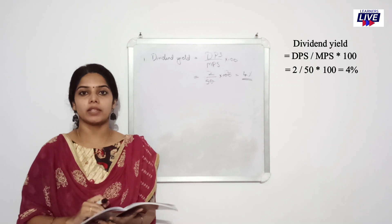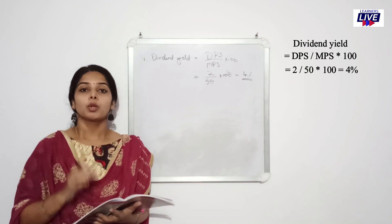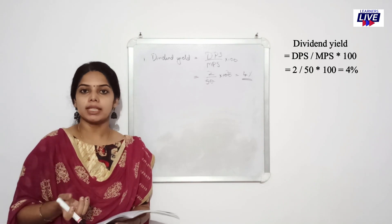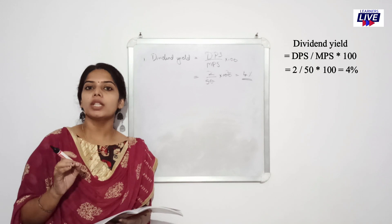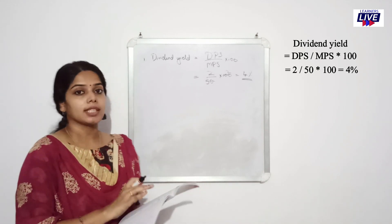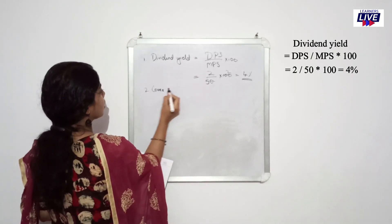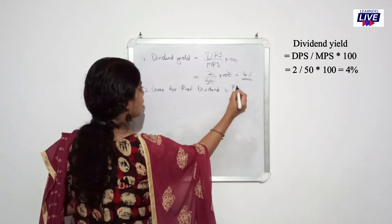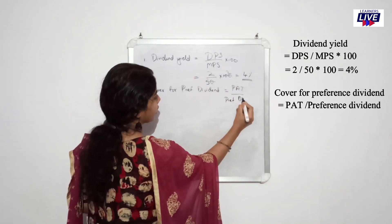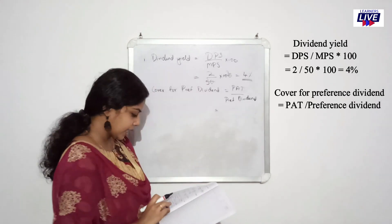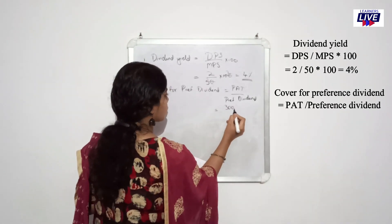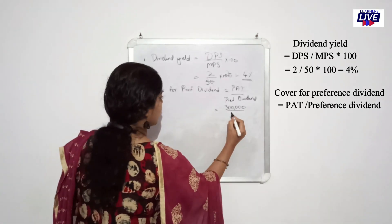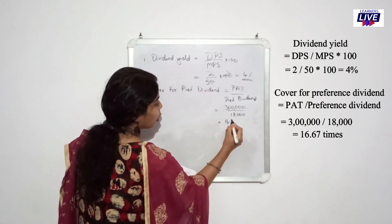Cover for preference dividend — the formula is profit after tax divided by preference dividend. This is the profit after tax. Preference shareholders dividend — that is the profit after tax. Cover for preference dividend equals profit after tax by preference dividend. Profit after tax is 3 lakh rupees. Preference dividend: 9% on 2 lakh equals 18,000 rupees. 3 lakh divided by 18,000 rupees equals 16.67 times.